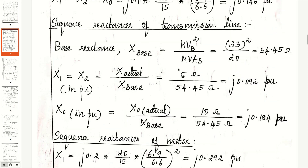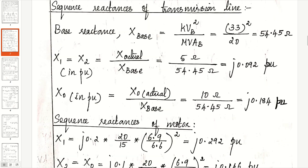For the transmission line, the sequence reactances are given in actual units (ohms), so convert them to per unit. For that, we calculate the base reactance as KVB squared divided by MVAB. The transmission line is in section 2, so base reactance is 33 squared divided by 20, which is 54.45 ohms. Positive and negative sequence reactances X1 and X2 in per unit are actual divided by base, giving j0.092 per unit. Zero sequence reactance in per unit is 10 ohms divided by 54.45, giving j0.184 per unit.